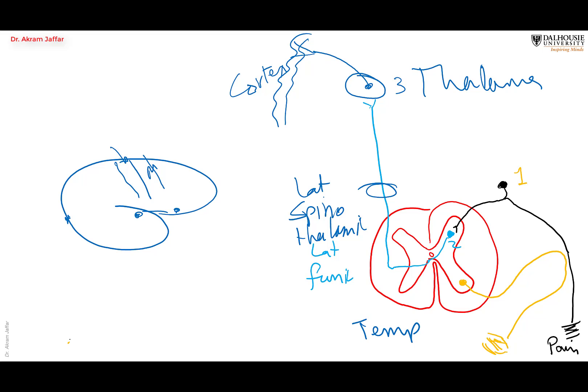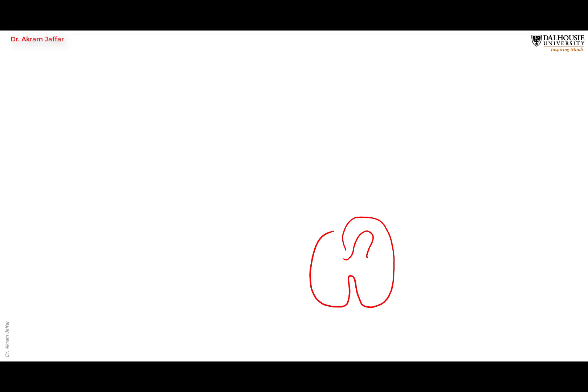To summarize: the first order neuron is in the dorsal root ganglion; the second order neuron is in the spinal cord for pain, crude touch, temperature, and pressure; the third order neuron is always in the thalamus; and the cortex involved is the post-central gyrus in the parietal lobe.